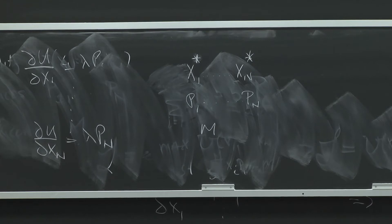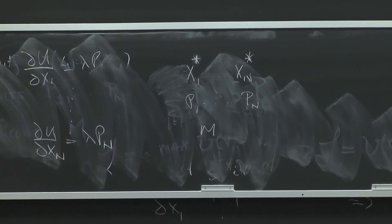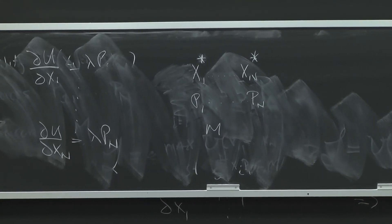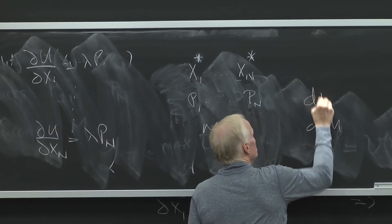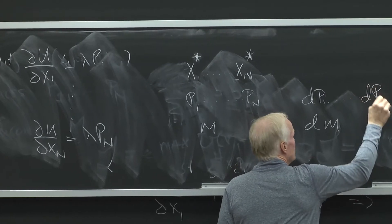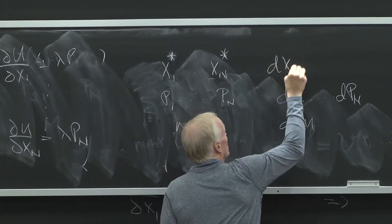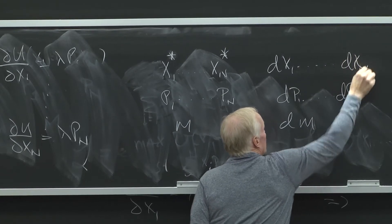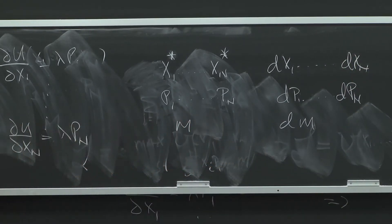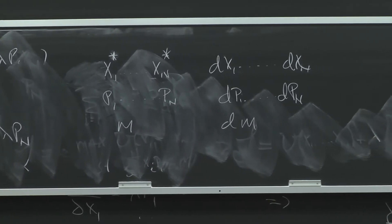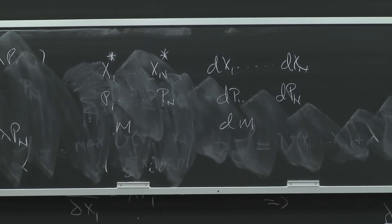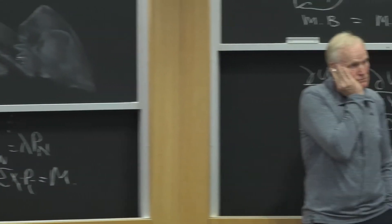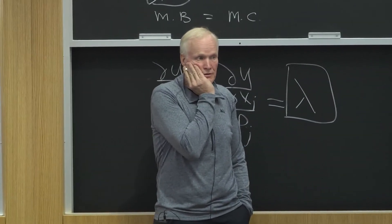And now let's assume that we perturb the market in some way. We change prices, we change income, maybe we change income and prices simultaneously, so we have some dm as a change in income, dm dp1 up to dpn as a change in prices. And I see dx1 up to dxn are the changes in consumption. And I want to know, has this perturbation to prices and income made this person better off or worse?